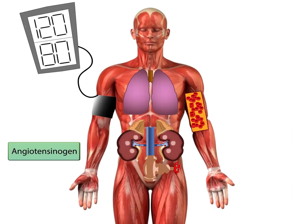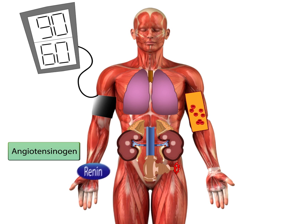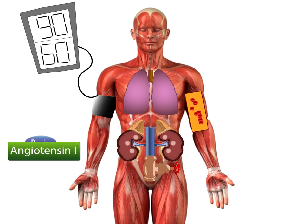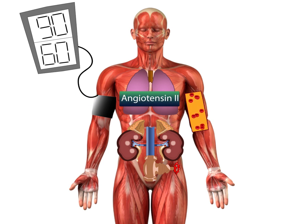Total body water volume can be regulated at two levels: the level of blood pressure and sodium content of blood. A drop in blood pressure is detected by the kidneys, which release the enzyme renin. This enzyme activates the hormone angiotensin by converting it to angiotensin 1 in the blood. As angiotensin 1 travels to the lungs, it is fully converted to the active form, angiotensin 2.